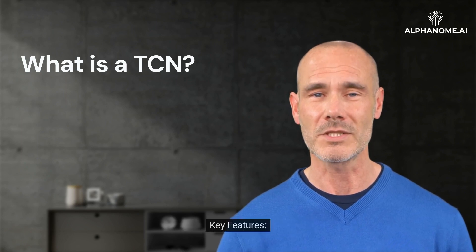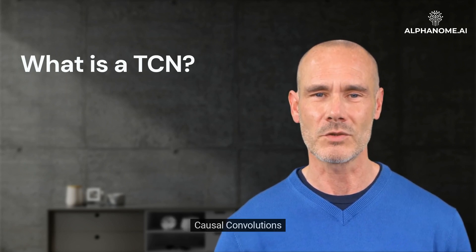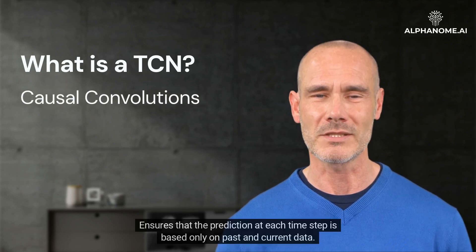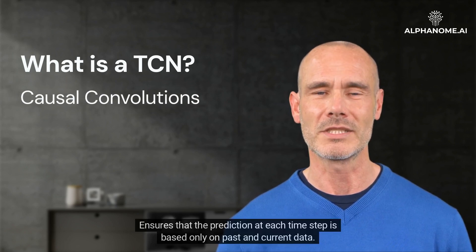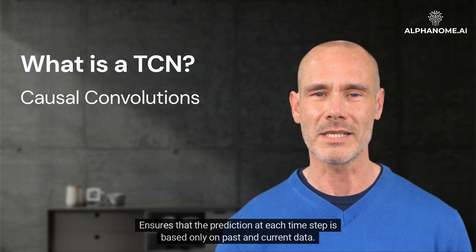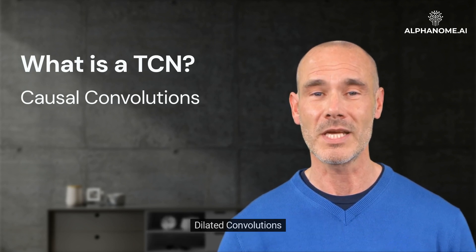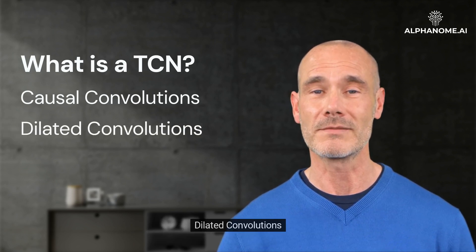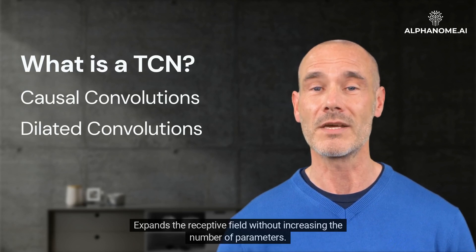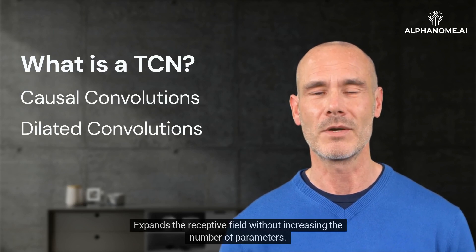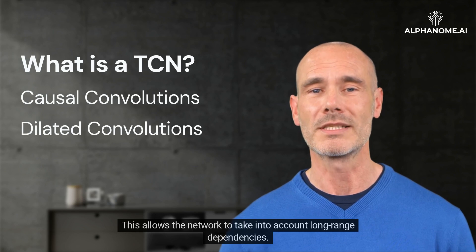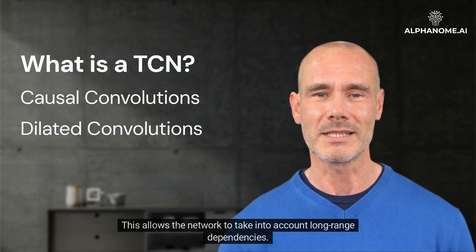Key Features. Causal Convolutions: ensures that the prediction at each time step is based only on past and current data. Dilated Convolutions: expands the receptive field without increasing the number of parameters, allowing the network to take into account long-range dependencies.